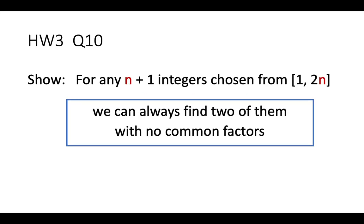I'm selecting three of the problems in the homework. The first one: we want to show that if we are selecting n plus 1 integers from 1, 2, 3 up to 2n, then no matter what happens, we must be able to find two of these numbers such that they don't have any common factor.